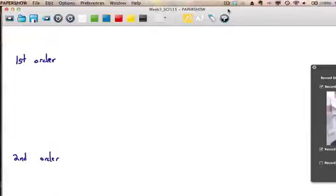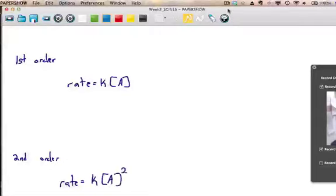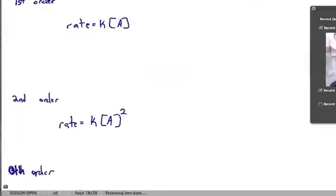The form of the differential rate law would look like rate is equal to K times the concentration of A. And we're just going to do everything in terms of A. For the second order rate law, rate would equal K times A to the second order. And for the zeroth order rate law, the rate would equal K times A to the zero, which would equal K, because A to the zero is equal to one.